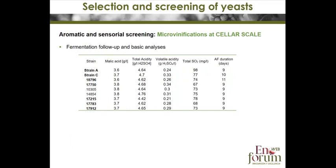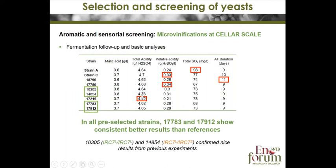Two preselected strains confirmed nice results: low volatile acidity, very short fermentation, and low sulfur dioxide production. Among all preselected strains, strain 17-783 and the Hoser strain showed very good characteristics and consistently better results than the reference strains.